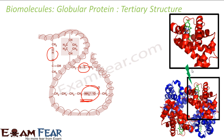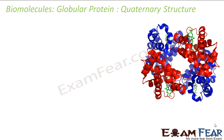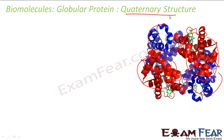So I have the secondary structure — either helix or beta-pleated — and when I further fold that secondary structure, I get the tertiary structure. Now, if multiple tertiary structures combine — for example, four tertiary structures mixed together — that is the quaternary structure. Some proteins are composed of two or more polypeptide subunits; these units combine to form a globe-like structure. This spatial arrangement of subunits with respect to each other is called quaternary structure.